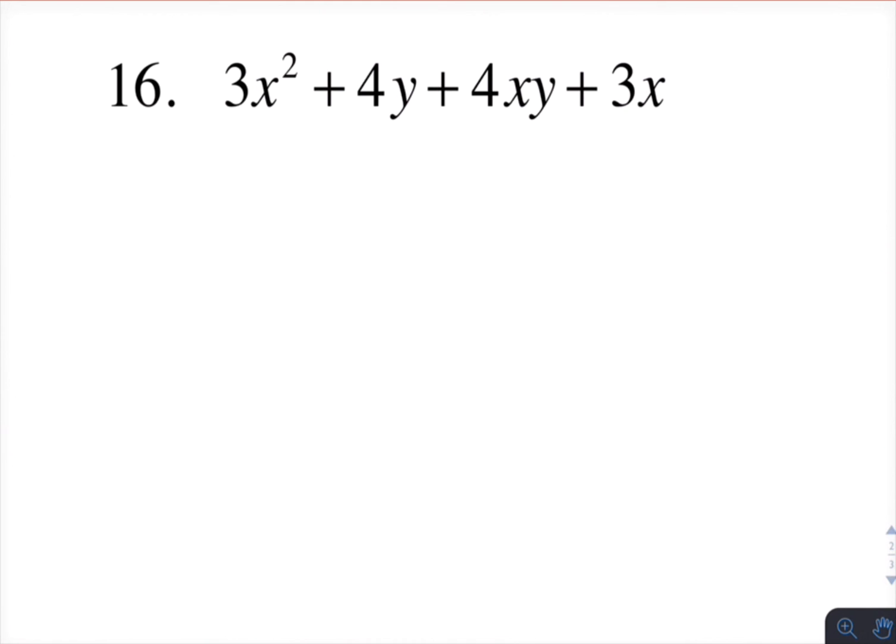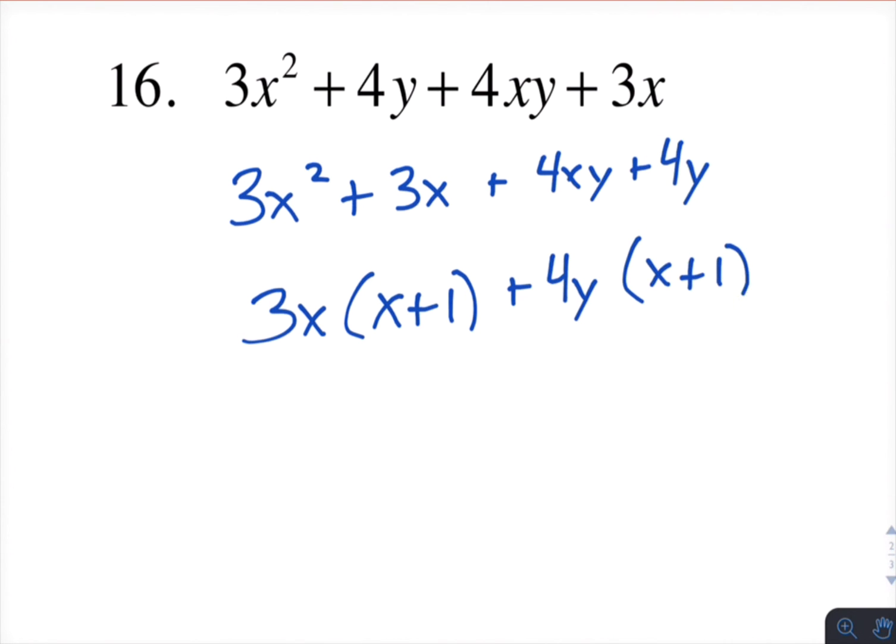Sometimes you have to rearrange the terms in order to group them. So I'll put the 3x squared and the 3x together like so. And then the 4xy and the 4y together. So I factor out a 3x. I have x plus 1. Factor out a 4y. x plus 1. So now there's an x plus 1 in common. And you get 3x plus 4y.